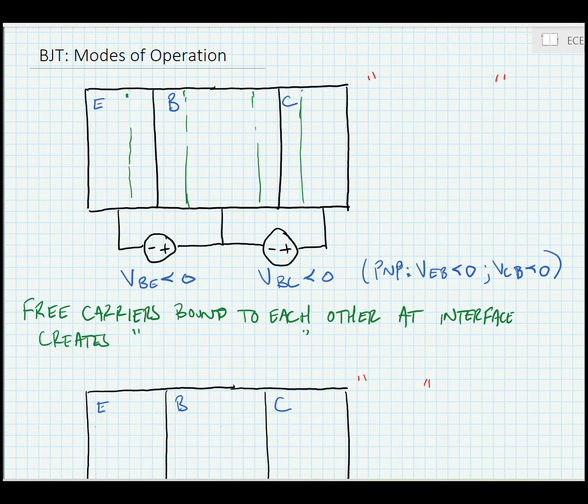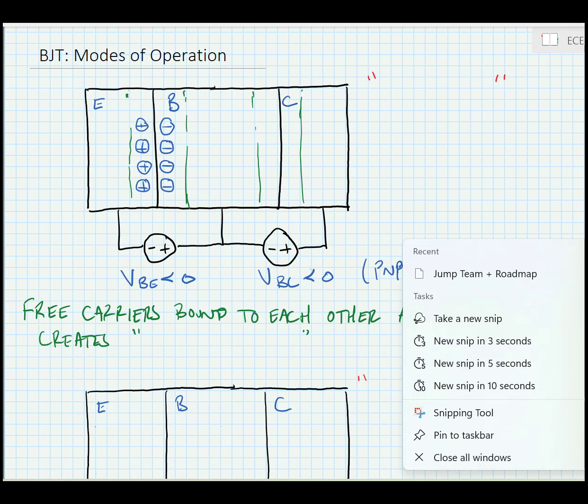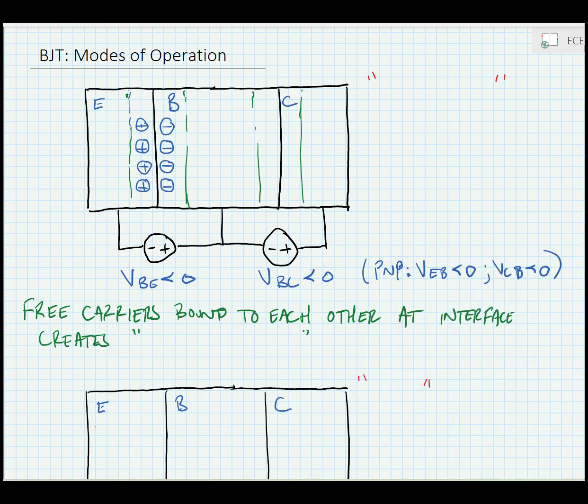In this mode where the base-emitter voltage is less than 0, and let's start when it's near 0, the majority carrier from each region diffuses across the PN junction. Here we have electrons from the emitter diffusing across into the base region, and we have holes from the base region diffusing across into the emitter region. Because the emitter is already full of negative charges or electrons and the base is already full of positive charges, these carriers get bound pretty quickly in this area and they form a depletion region at the interface.